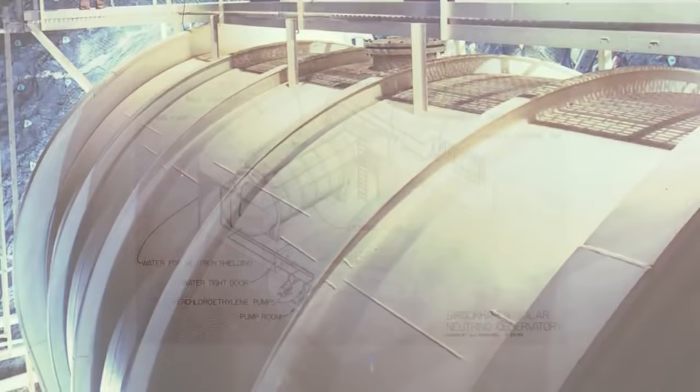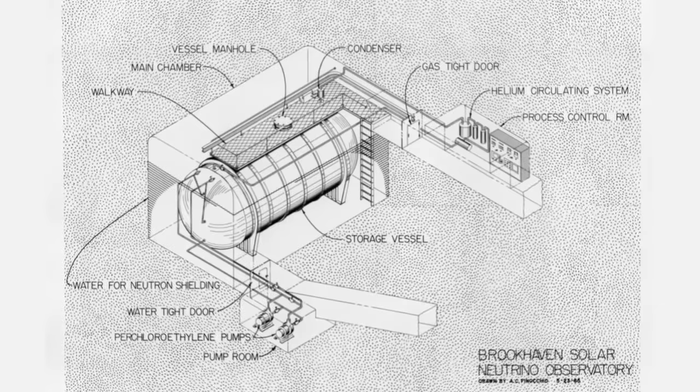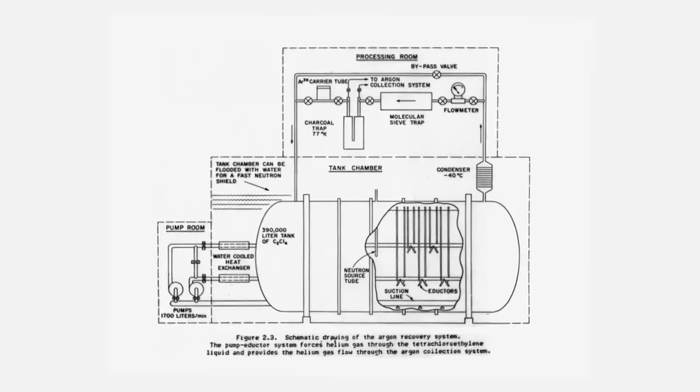Every few weeks, he bubbled helium through the tank to collect the radioactive argon. Counting the amount of atoms allowed him to determine how many nuclei had undergone the reaction induced by a neutrino. So it was able to determine how many neutrinos had been captured.